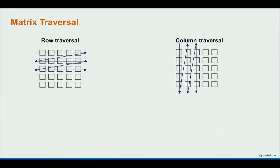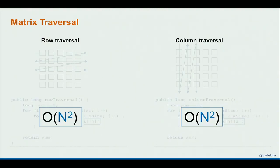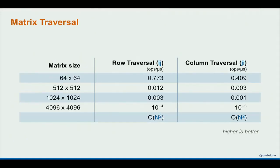Let's look at a basic example. I took a two-dimensional array — a matrix — and traversed it two ways: row traversal (same row, changing columns) versus column traversal (same column, changing rows). In code, these two Java snippets are almost identical — the only difference is matrix[A][J] versus matrix[J][I] in the inner loop. The complexity of both is O(n²). So you'd expect them to behave the same at runtime — but that's not the case.